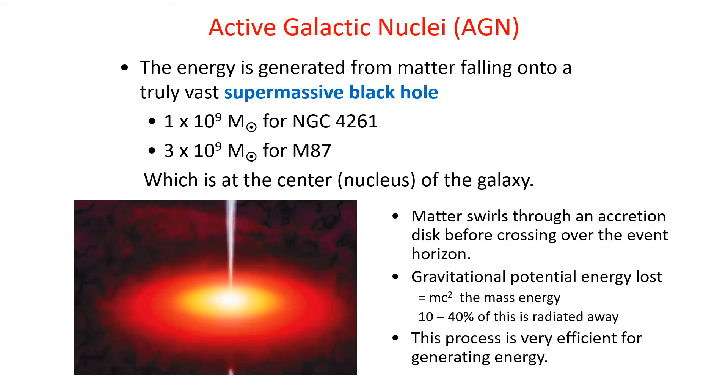AGN, as they're abbreviated, active galactic nuclei, are presumed to represent the energy from matter falling onto a truly vast supermassive black hole. These range from much bigger than the Milky Way solar mass, from 1 billion solar masses for the spiral galaxy NGC 4261, to 3 billion solar masses for the elliptical galaxy M87.